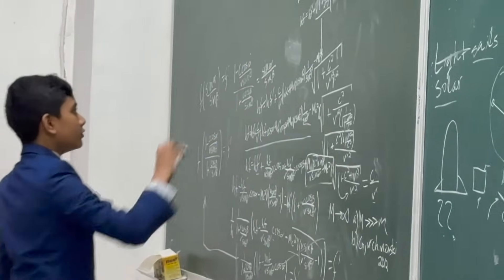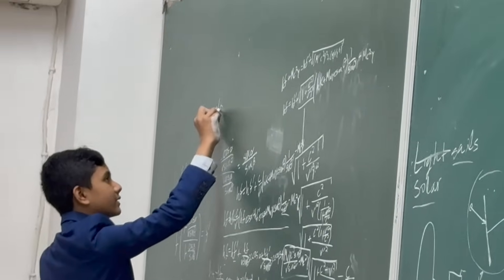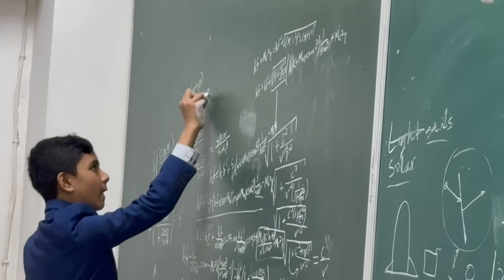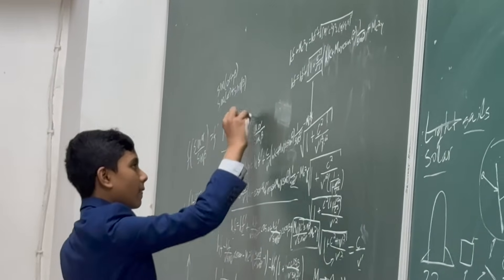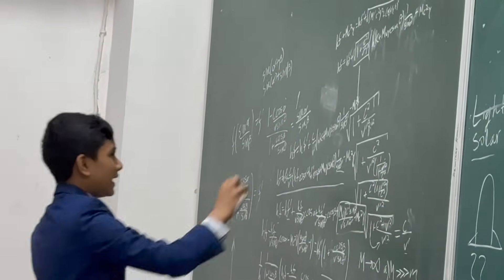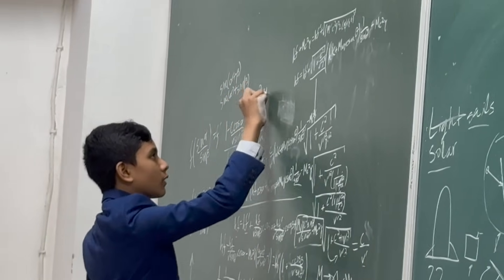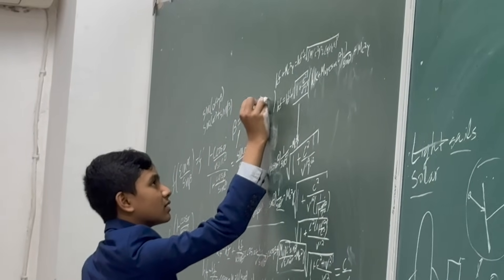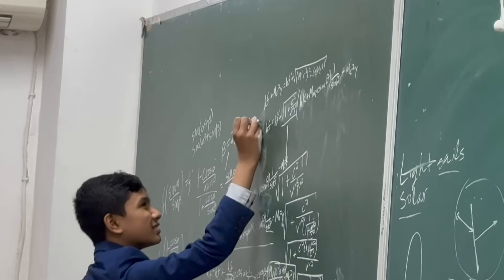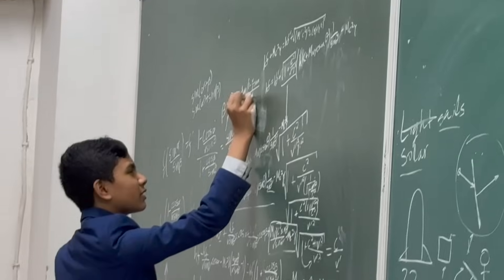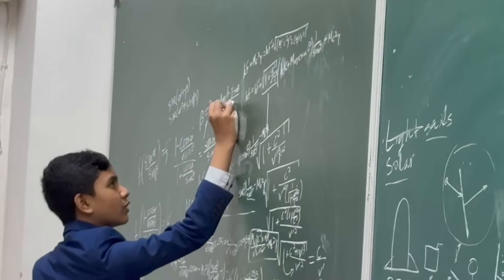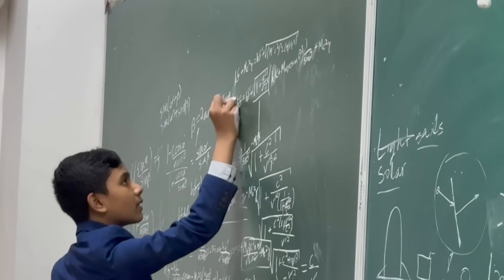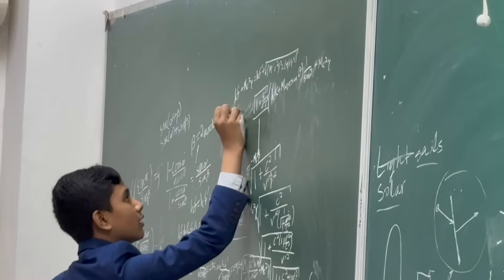Now from this relation, using the trigonometric identities for sine addition — sine(alpha + beta) and sine alpha plus sine beta — the author eventually obtains: beta is equal to 2 arctan of 1 minus v over c, times sine alpha over 1 plus v over c, times sine theta over 1 plus v over c times sine theta.